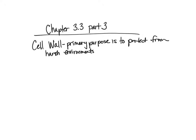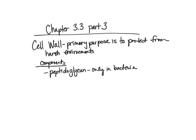We have different components of the cell wall and these differ between our gram positive, gram negative, and archaea. Let's talk first about the components of our bacterial cell wall. The key component is peptidoglycan, which we find only in bacteria. What we find in archaea is called pseudo-peptidoglycan — we'll talk about that in a moment.